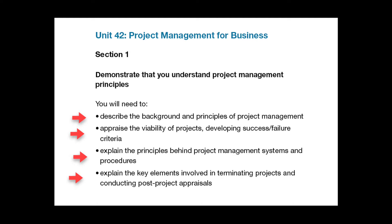Bullet point four is about the closure stage, also known as the close-down, as well as completion of the project activity. It includes the review and evaluation process, which is a critical stage that is often poorly managed. You'll need to explain what activities should be carried out at this stage and also why they are so important.